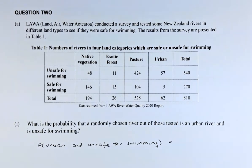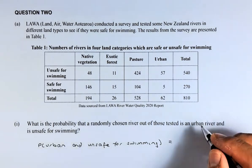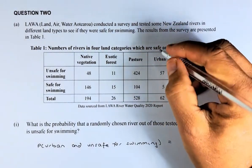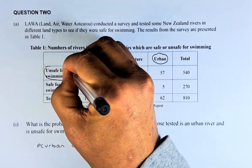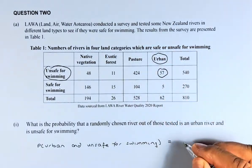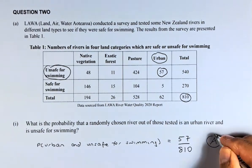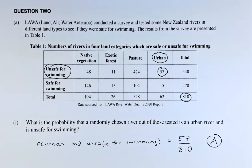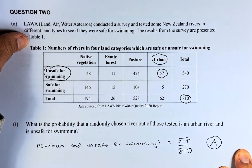The first part — sorry, 2A part 1 — asks: what is the probability that a randomly chosen river out of those tested is an urban river and is unsafe for swimming? So you look for urban river over here, and unsafe for swimming is over here. That number is 57 out of a total of 810. You do not need to simplify to a decimal — 57 over 810 will be good enough for an achieved in this question.